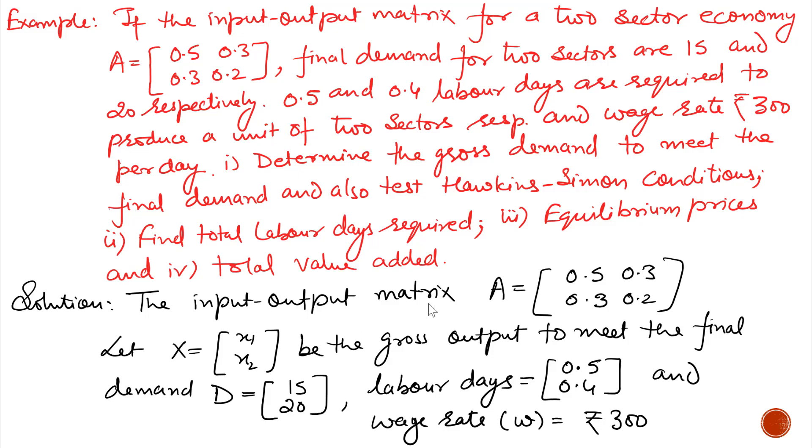The input-output matrix is given A = [0.5, 0.3; 0.3, 0.2]. Let X denote output, which equals X1, X2, with the gross output to meet the final demand, where final demand is 15 and 20, labor days 0.5 and 0.4, and wage rate is 300 rupees.